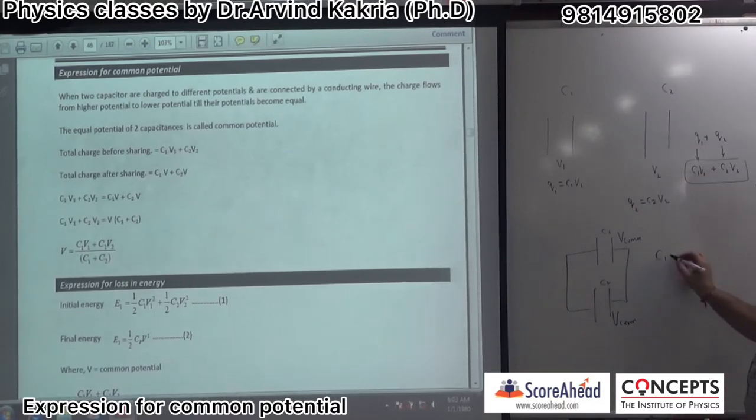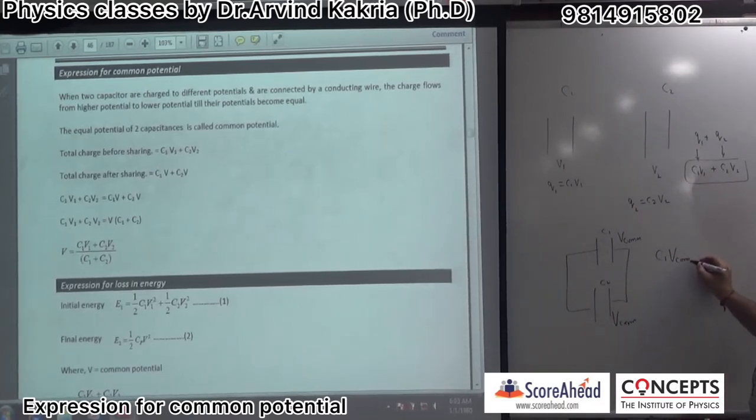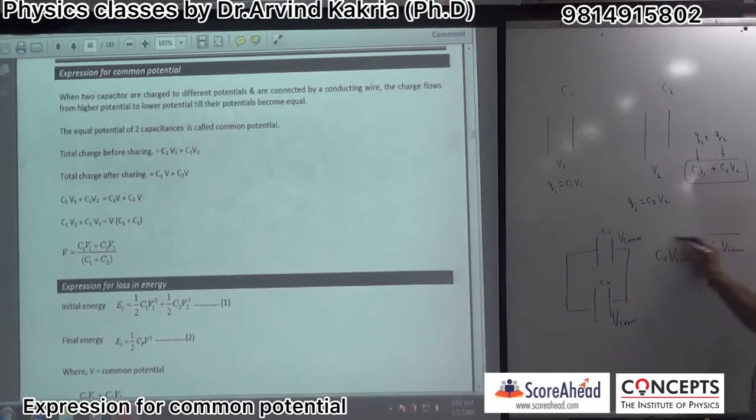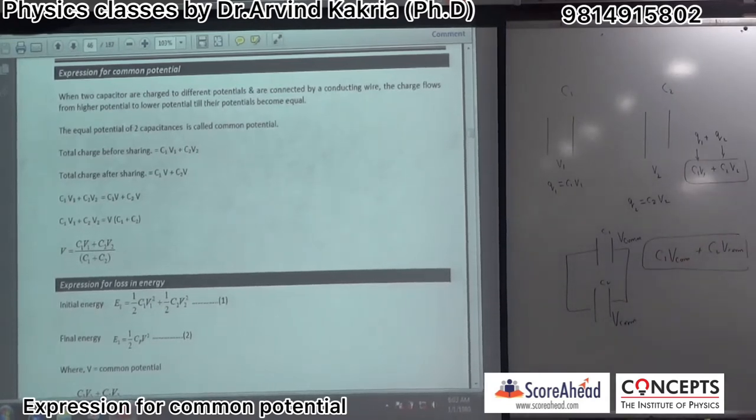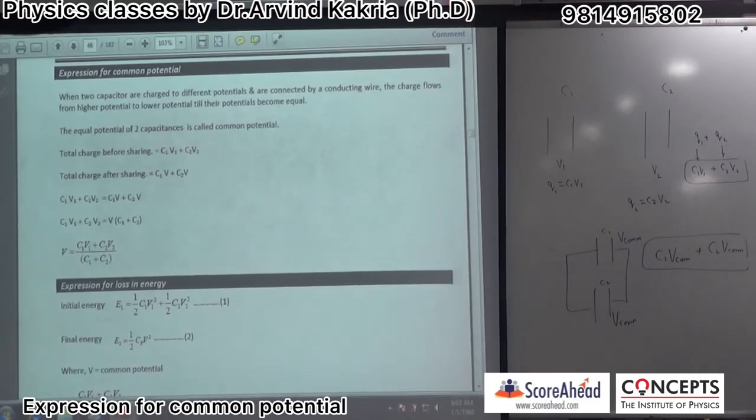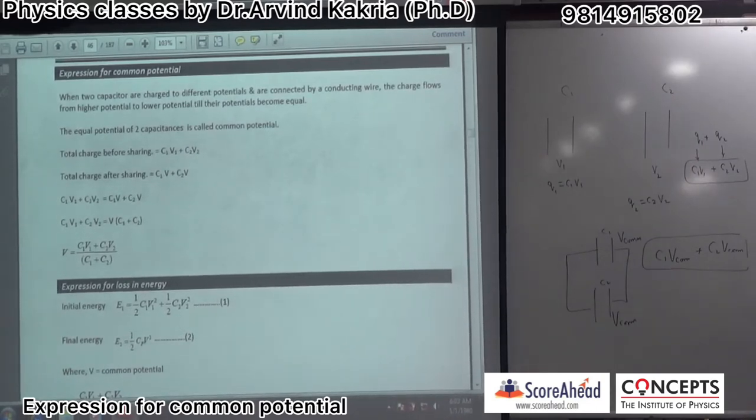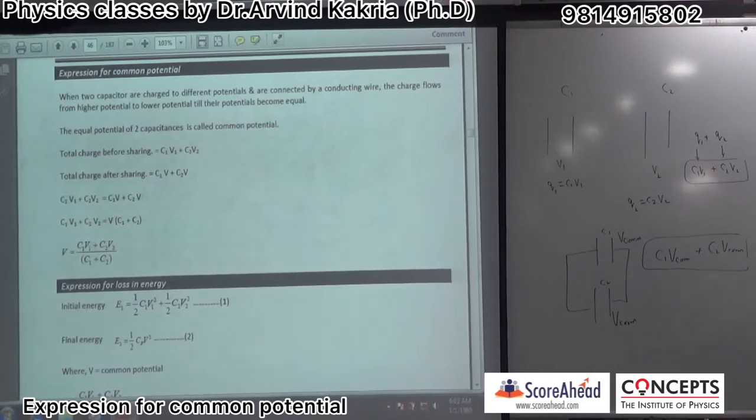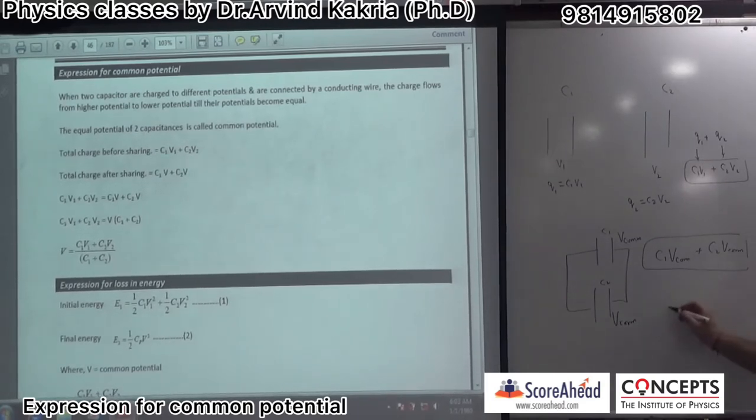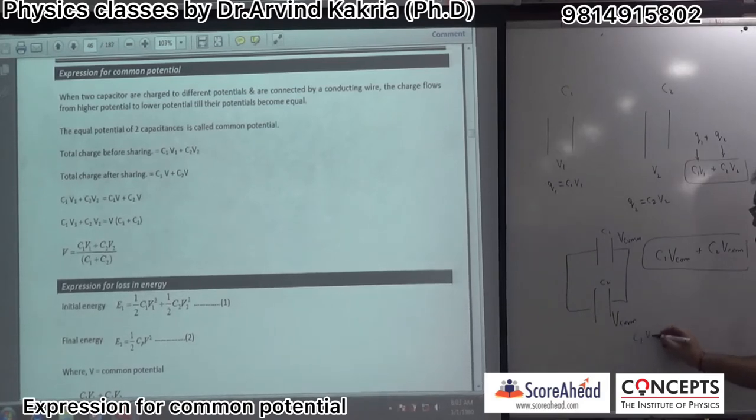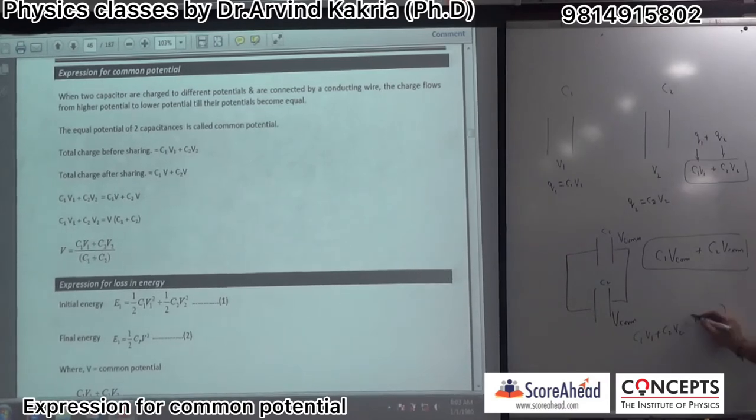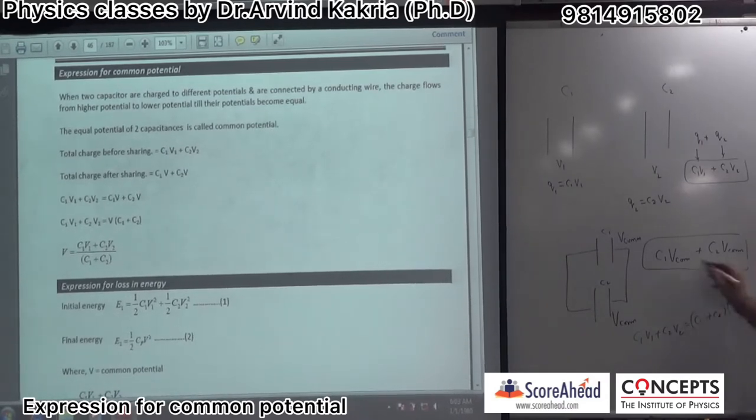So how much charge will come? This charge is coming. Total charge amount will remain the same before connection and after connection. Total charge will remain the same with both. Let's equate both. C1 into V1 plus C2 into V2 is equal to C1 plus C2 into V common.